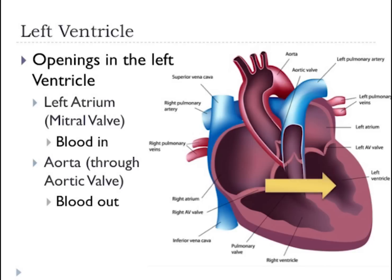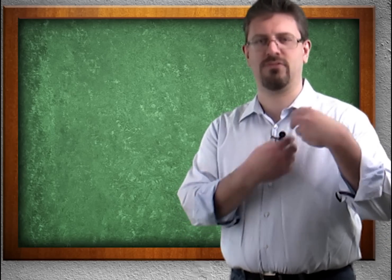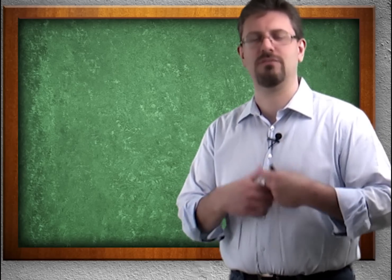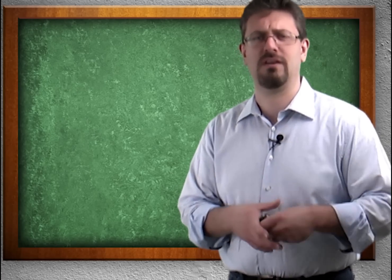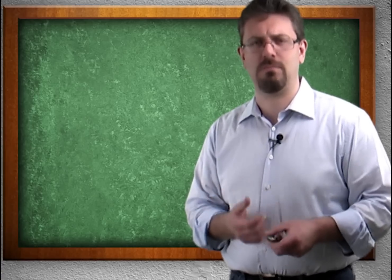The openings into the left ventricle include the left atrium through the mitral valve — valves later on — and the aorta. The aorta is this big artery coming off the heart; we will look at arteries, veins, and all that in another series of videos. The walls of the left ventricle are usually two to three times thicker because of how powerful they need to be.